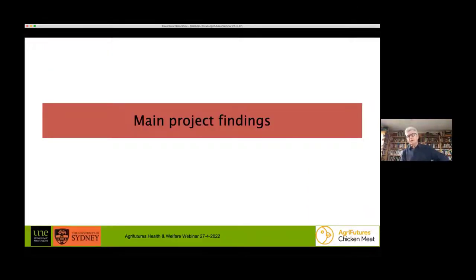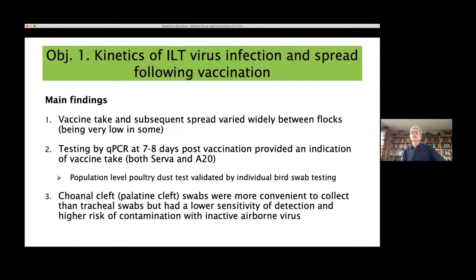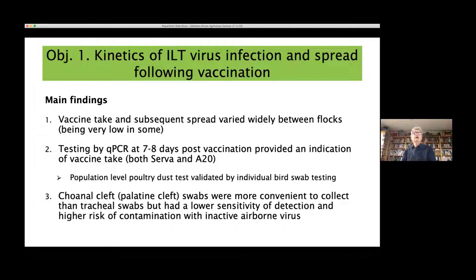I'm going to go through the project findings objective by objective. One of the first objectives was to look at the kinetics of ILT virus in vaccinated flocks once you water vaccinate. Peter Groves, my collaborator at the University of Sydney, and Zoatechny looked after this part of the project initially. The main findings were that there was a lot of variation in the degree of vaccine take and how efficiently the virus spread between chickens after vaccination — very low in some flocks, almost vaccination failure.